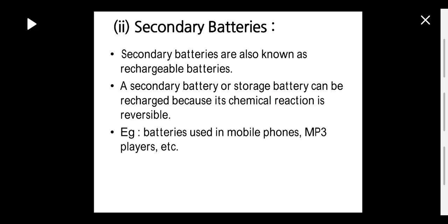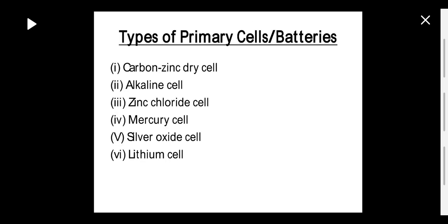The second type is secondary batteries, which are rechargeable batteries. In them, the chemical reaction is reversible. A secondary battery, also known as a storage battery, can be recharged because its chemical reaction is reversible. These batteries are used in mobile phones, rechargeable batteries, and MP3 players.